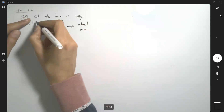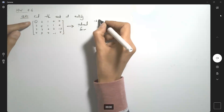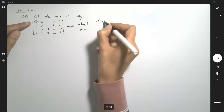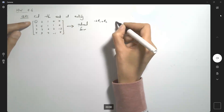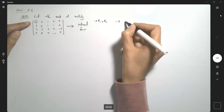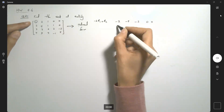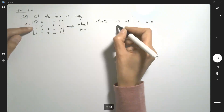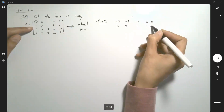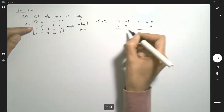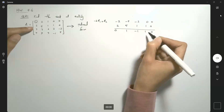We're going to multiply the first row by negative 2 and add it to the second. So doing the algebra: negative 2, negative 4, negative 2, 0, 0, add it to 2, 5, 1, 1, and 0, which gives 0, 1, negative 1, 1, and 0.